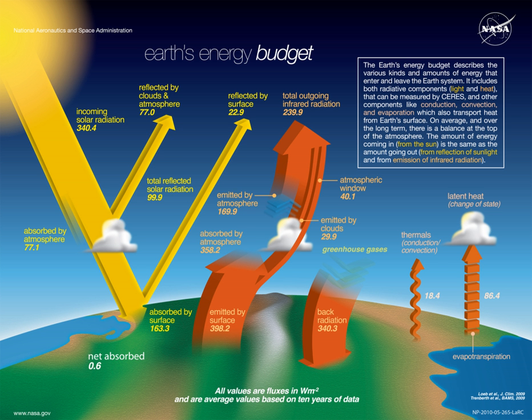The major atmospheric gases are transparent to incoming sunlight, but are also transparent to outgoing thermal radiation. However, water vapor, carbon dioxide, methane, and other trace gases are opaque to many wavelengths of thermal radiation. Earth's surface radiates the net equivalent of 17% of incoming solar energy in the form of thermal infrared. However, the amount that directly escapes to space is only about 12% of incoming solar energy. The remaining fraction, 5–6%, is absorbed by the atmosphere by greenhouse gas molecules.